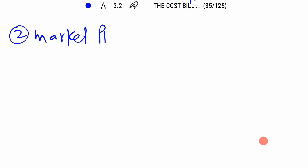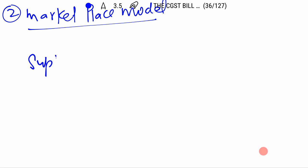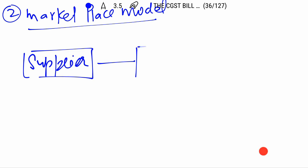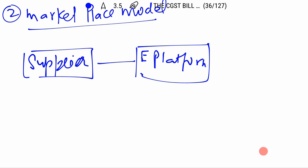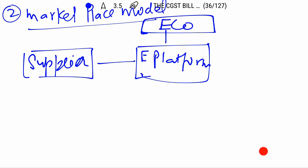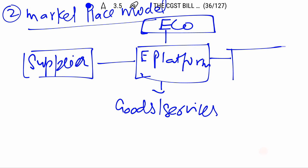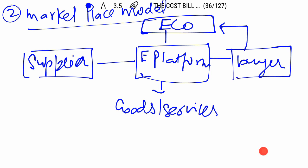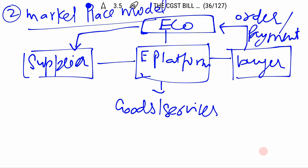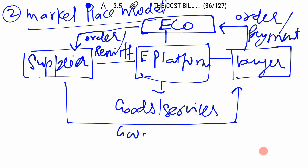The second model is the marketplace model. In the marketplace model, the supplier does not own its own electronic platform. Instead, an electronic commerce operator — who can own, operate, and manage the platform — allows the supplier to display goods and services. The buyer can be linked to this electronic platform, place an order to the ECO, and make payment to the ECO. The electronic commerce operator then forwards the order to the supplier. After charging commission or fees, the amount from the buyer is passed to the supplier, and then the supplier will supply goods and services to the buyer.